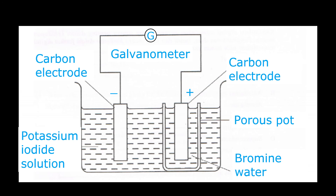Three marks are provided: one mark for a functional diagram using all the apparatus and materials given; one mark for labels — potassium iodide solution, carbon electrode, porous pot, bromine water, and galvanometer (G); and one mark for correct positive and negative terminals. The negative terminal is the electrode immersed in potassium iodide solution because it is the reducing agent. The positive terminal is the electrode immersed in bromine water because bromine water is the oxidizing agent.